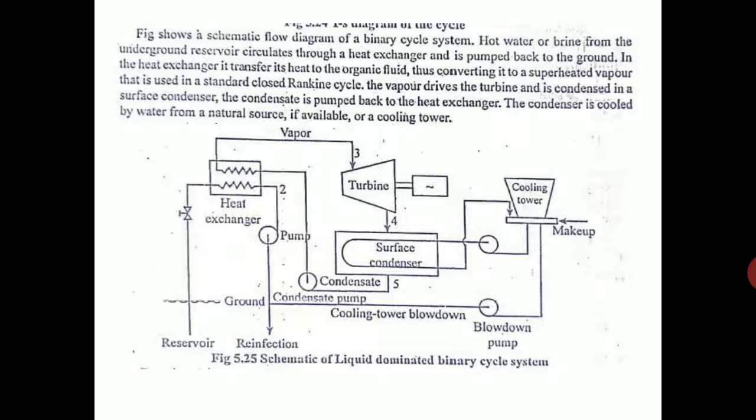The hot brine is pumped back after releasing the heat. The heat is used by the refrigerant. The heat exchanger acts like a boiler. It converts the liquid refrigerant into vapor. The vapor is sent to the turbine. The turbine rotates and generates electricity. The output of the turbine is sent to the condenser, which is condensed and sent back again to the heat exchanger. This is a closed loop cycle.